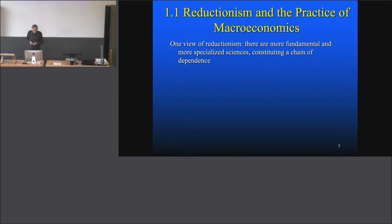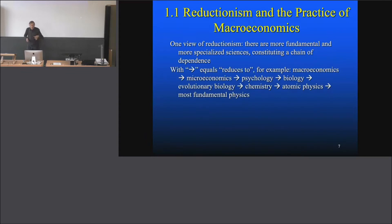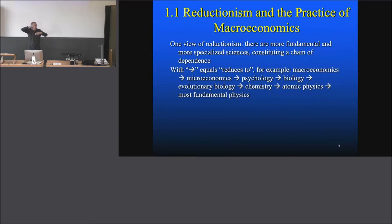...that we're speaking about a reduction of macroeconomics to microeconomics. One view of reduction is that there are more fundamental and more specialized sciences constituting a chain of dependence. There is a chain of dependence of sciences by reduction — if you read the arrow as 'reduces to,' then macroeconomics somehow reduces to microeconomics. So you can build up macroeconomics from microeconomics. That's the basic idea.